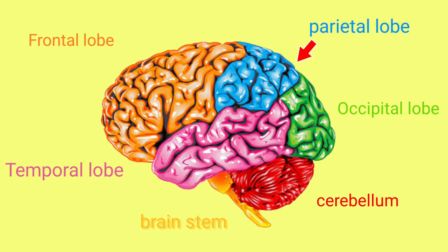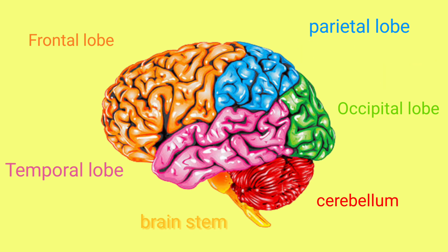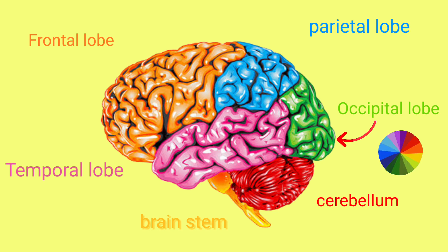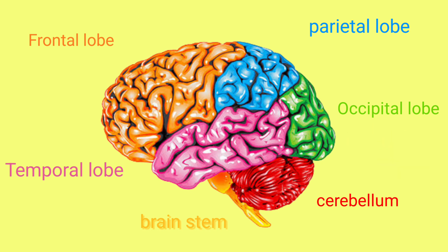The parietal lobe of the brain interprets the sensory information acquired by touch, like temperature, pressure, vibration, and pain. The occipital lobe processes visual information, like color and size, and the temporal lobe recognizes and processes sound.